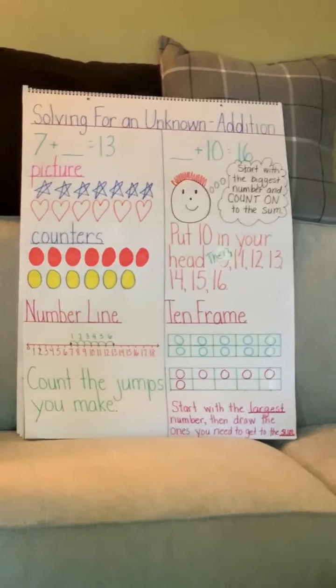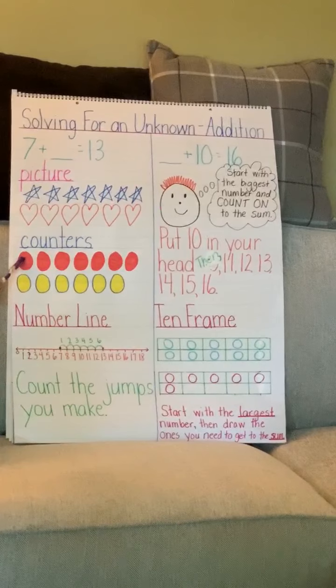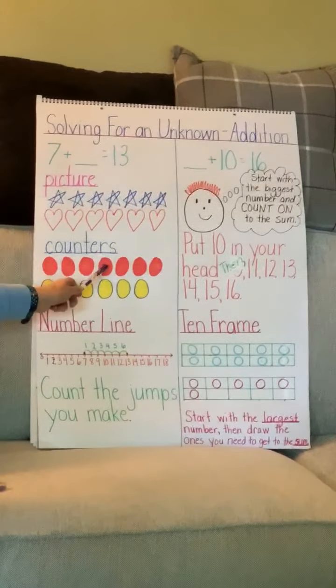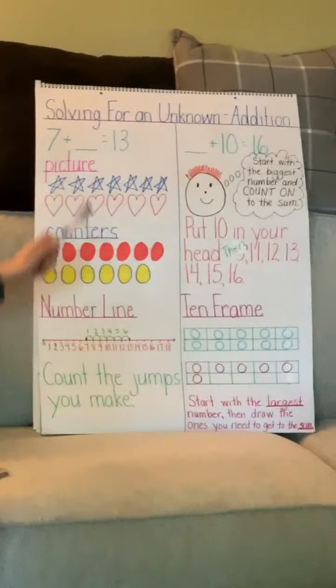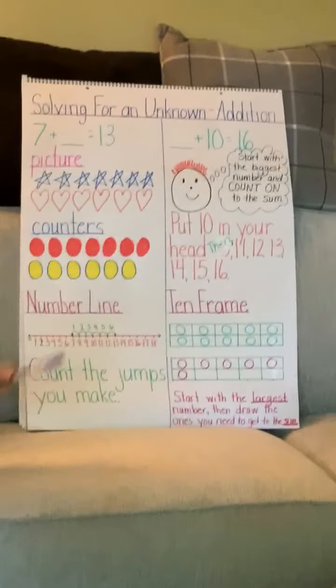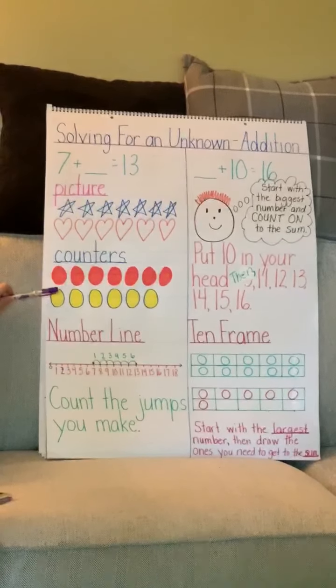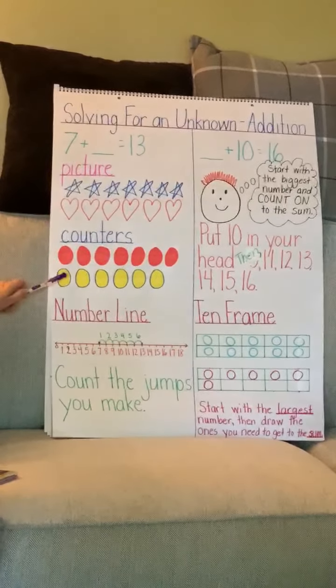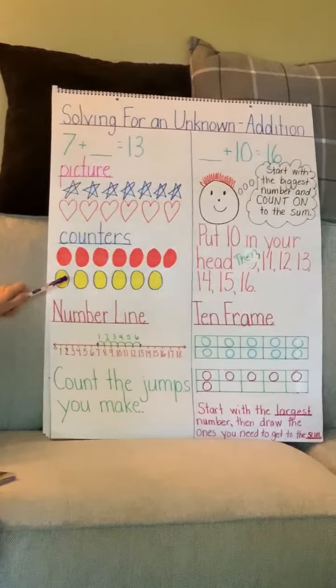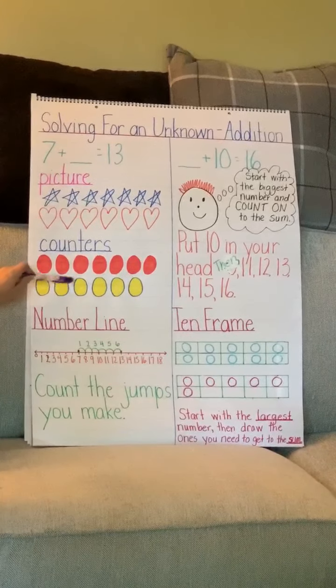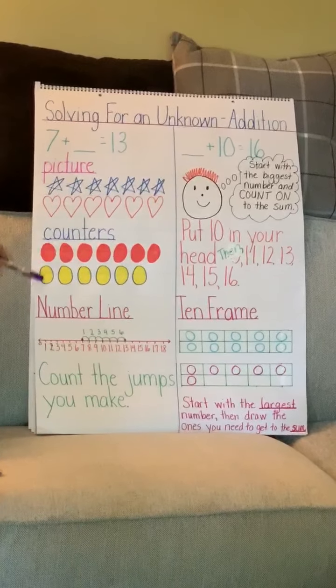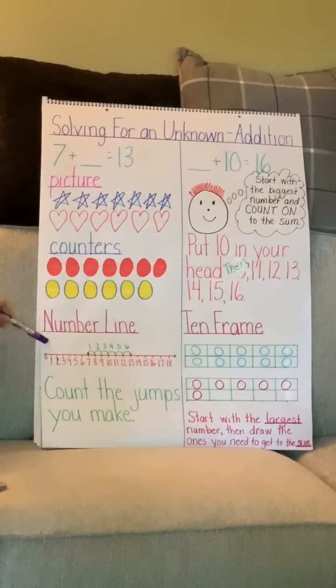So our answer in the blank is going to be 6. We could also show that same answer with counters. I start with seven red counters: 1, 2, 3, 4, 5, 6, 7. Then I show yellow counters, putting 7 back in my mind and counting on until I hit our sum of 13: 8, 9, 10, 11, 12, 13. Counting just the yellow ones gives us 1, 2, 3, 4, 5, 6 — just like the stars, the answer is 6.